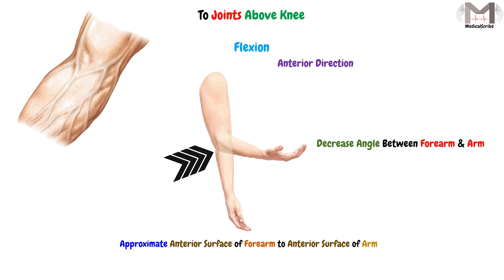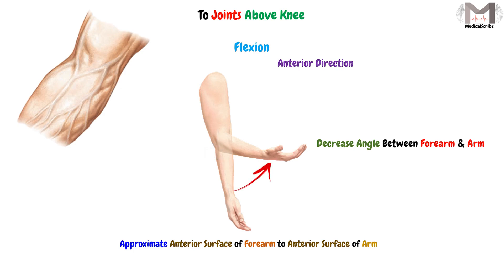We decrease the angle between the forearm and the arm during elbow flexion. When the forearm is extended, the angle between the arm and forearm is about 180 degrees, but when we flex the elbow, that angle is decreased. This applies to all joints above the knee.